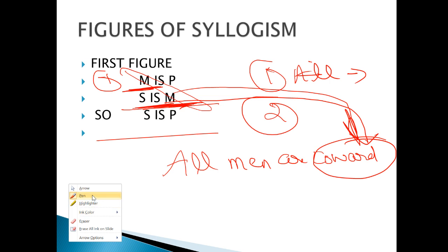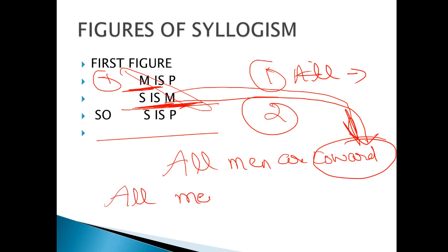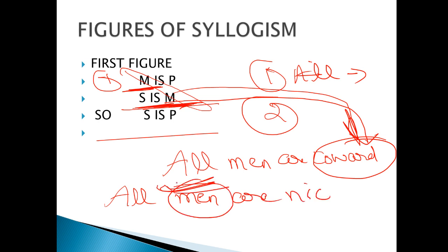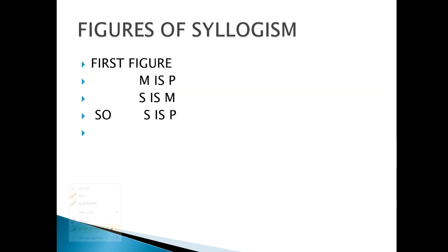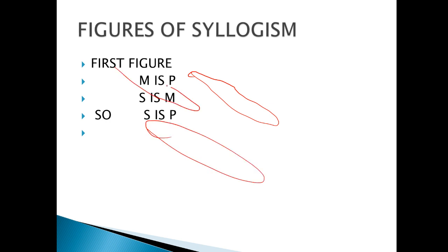So first figure mein hamari shape hoti hai is tareeqe se. Middle term hamara yeh hoga — sirf M ko dhoondhna hai, jo common hai, jo middle hai. Ab second figure ko dekhein — second figure mein woh right side par hona chahiye. Third figure dekhein — third figure mein woh left side par hona chahiye.